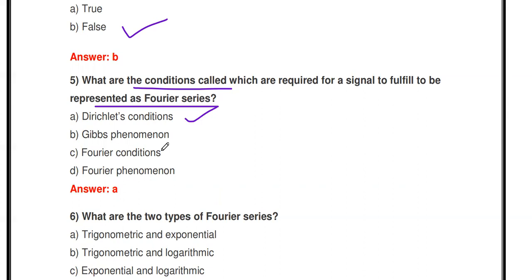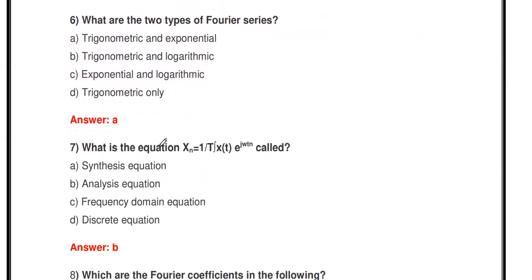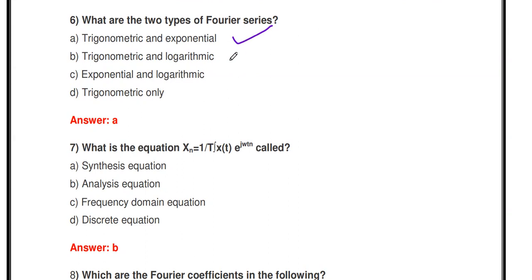Next question: What are the two types of Fourier Series? The options are: Trigonometric and Exponential, Trigonometric and Logarithmic, Exponential and Logarithmic, or Trigonometric and Cosine/Polar. The correct answer is Trigonometric and Exponential Fourier Series — those are the two main types.